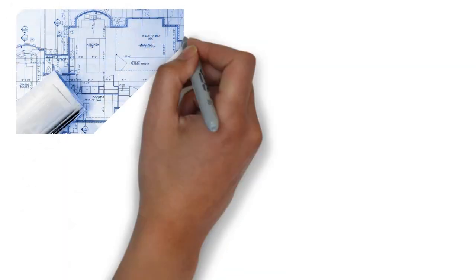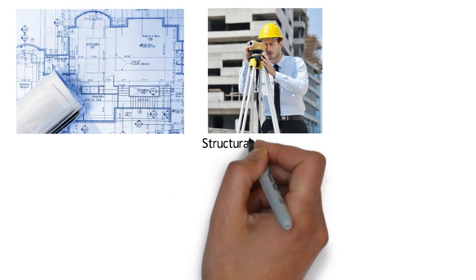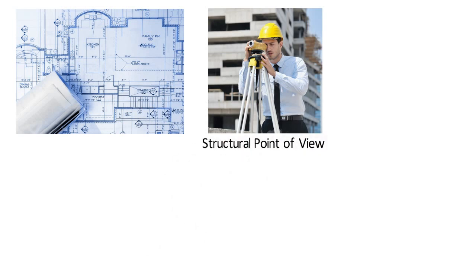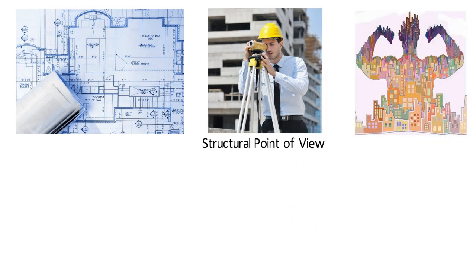After the architect creates the blueprint of the building plan, the engineer goes over the architect's design and decides what materials must be used from a structural point of view to bring the architect's design to completion and to make the building strong enough for use.